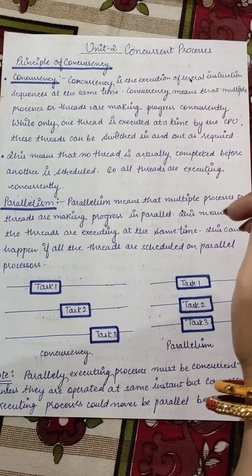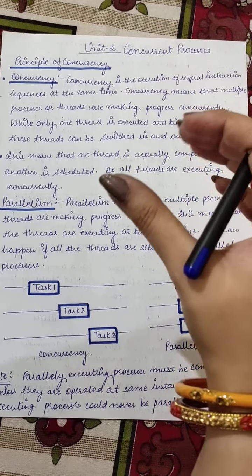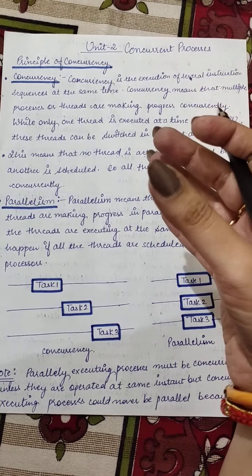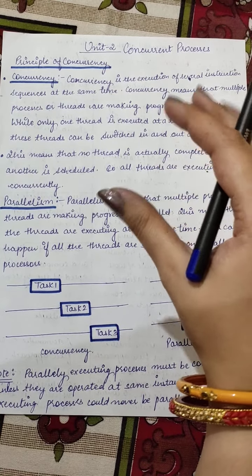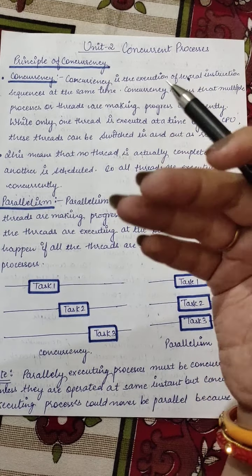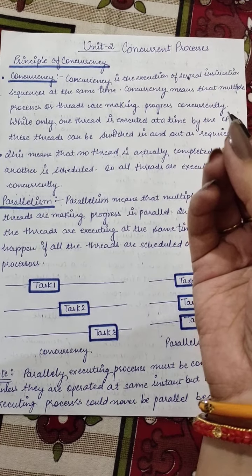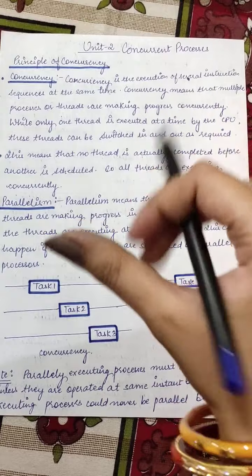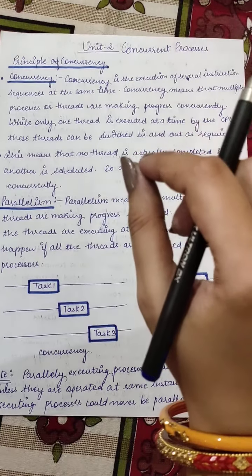First, concurrency — concurrency means we have more than one process. We all know we are using multitasking and multiprocessing, meaning we want more than one task or program to execute. If we have only one processing unit and we need to complete or attempt more than one task, then there needs to be some concurrency. Concurrency means some tasks are being managed at the same time.